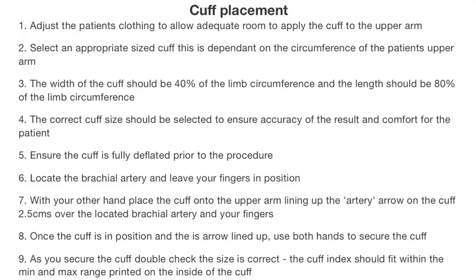It is vital to ensure correct cuff placement to provide an accurate blood pressure measurement. Firstly, adjust the patient's clothing to allow adequate room to apply the cuff to the upper arm. Select an appropriate size cuff — this is dependent on the circumference of the patient's upper arm. The width of the cuff should be 40% of the limb circumference and the length should be 80% of the limb circumference. The correct cuff size should be selected to ensure accuracy of the result and comfort for the patient.